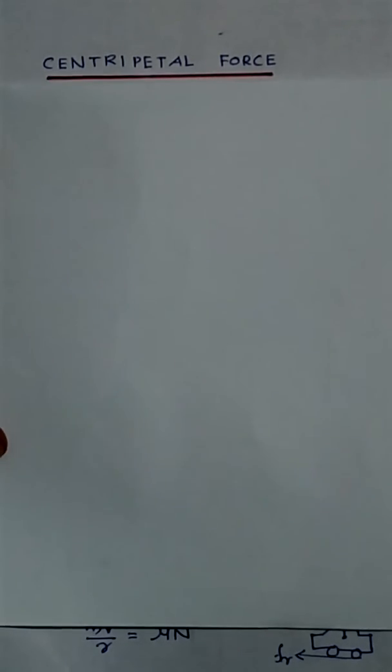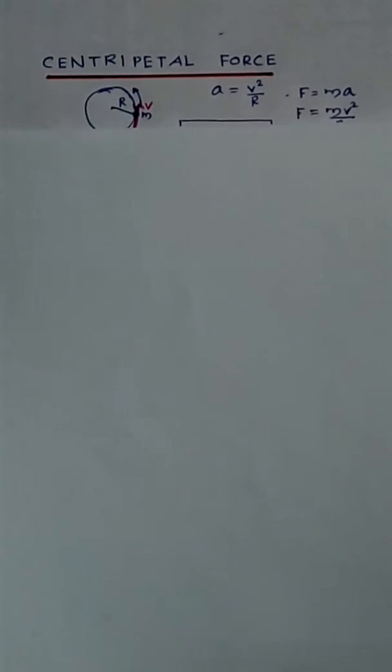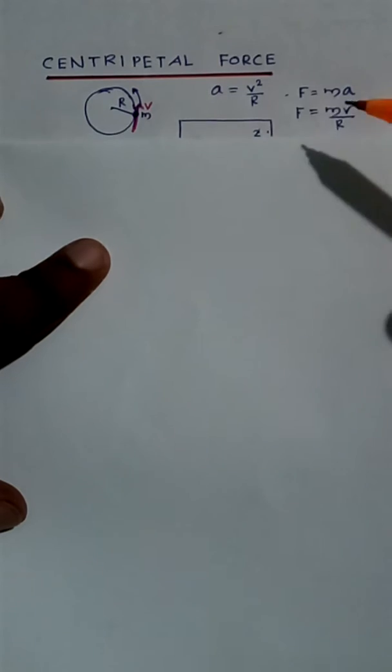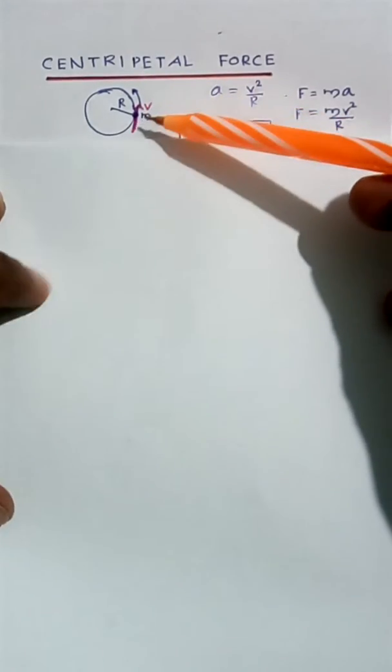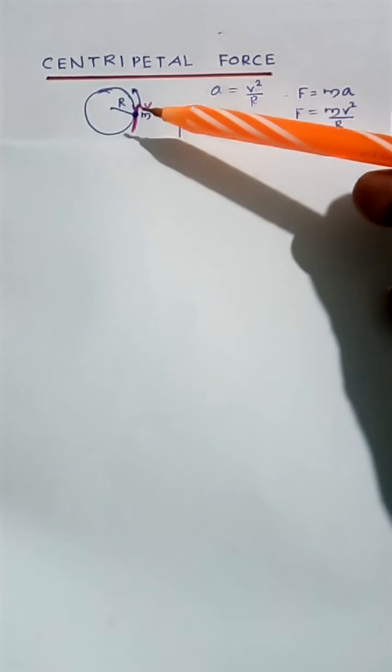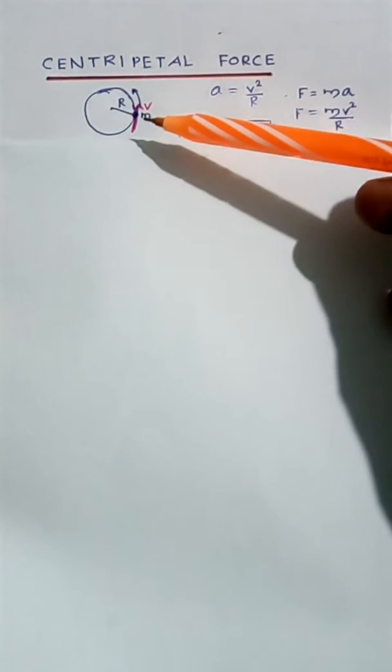Now we are discussing centripetal force. In each examination there might be questions related to this topic. First of all we have to know what centripetal force is. Suppose a body of mass m is moving through a circular path of radius r with velocity v — it will experience an acceleration due to the change in direction of its velocity, and this acceleration is called centripetal acceleration, or center-seeking acceleration.